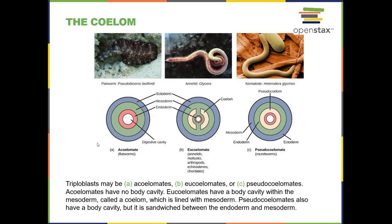The correct term for the body cavity is the coelom — C-O-E-L-O-M. The first O is silent, so it's pronounced 'coelom.' All of the animals that have three germ layers have the possibility of having the coelom, the body cavity. However, there are a few animals that don't have a coelom but do have three tissue layers — triploblasts that have no coelom are called acoelomates.